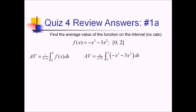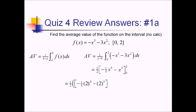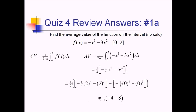We have a 1 half out in front from our fraction. And then inside, the exponent bumps up to a 4, so I've got negative 1 fourth x to the fourth minus — this bumps up to a 3, dividing by that we have x cubed — again evaluated from 0 to 2. So I've got 1 half times all of this with 2 plugged in minus all of this stuff with 0 plugged in. All the stuff in the second bracket is gone because we're multiplying by 0. Over here, negative 1 fourth times 16 is negative 4, and then this is negative 8. Negative 4 minus 8 is negative 12. Half of that is negative 6.